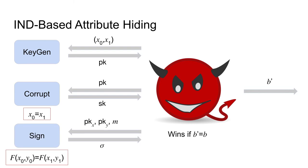The adversary also has access to a corruption oracle, which it can query using a public key PK to obtain the corresponding secret key SK. To prevent the adversary from trivially determining bit B, it can only query the corruption oracle using public keys that were the reply to a key generation query where attribute sets X0 and X1 are equal. The signing oracle behaves exactly as in the unforgeability game, but we additionally require that the policy evaluated on the left challenge attributes of the sender and receiver keys used in the signing query equals the policy evaluated on the right challenge attributes, otherwise the adversary might directly learn bit B.